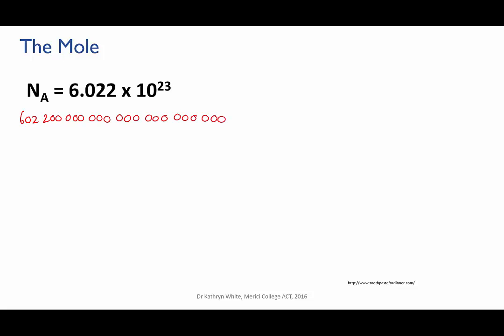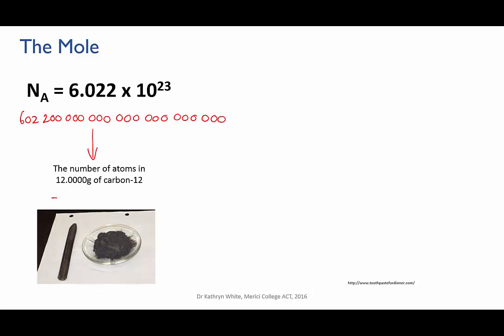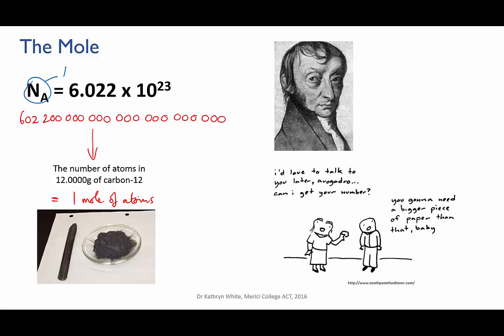It's a big, big number, but that makes sense because since atoms are so small, it's convenient to count them in large groups. Remember that although this is a massive number, this number of atoms of carbon is still only a small pile in the palm of your hand. Now, apart from being the number of things in one mole, this number is also known as the Avogadro constant or Avogadro's number.